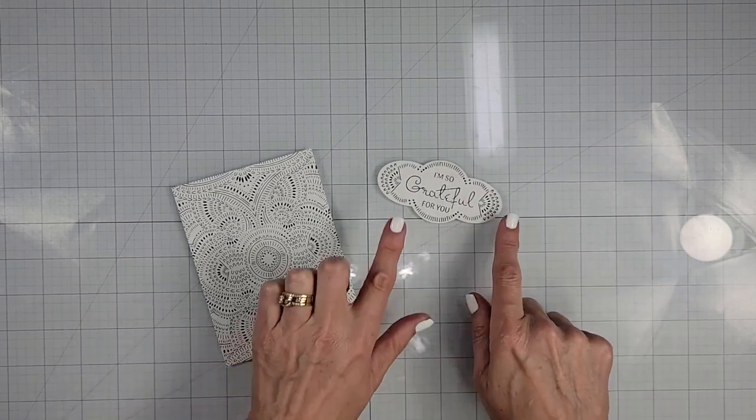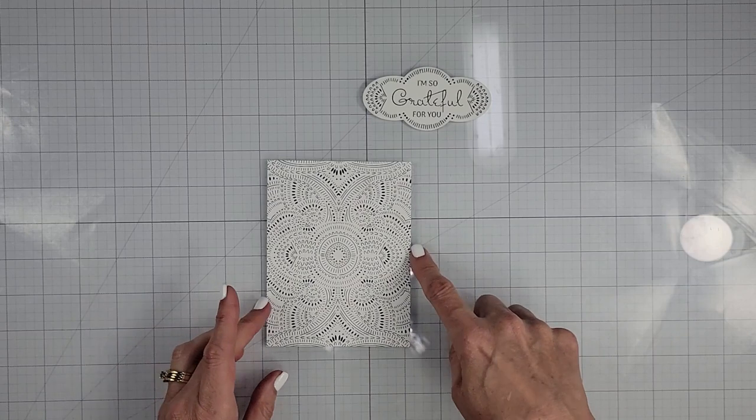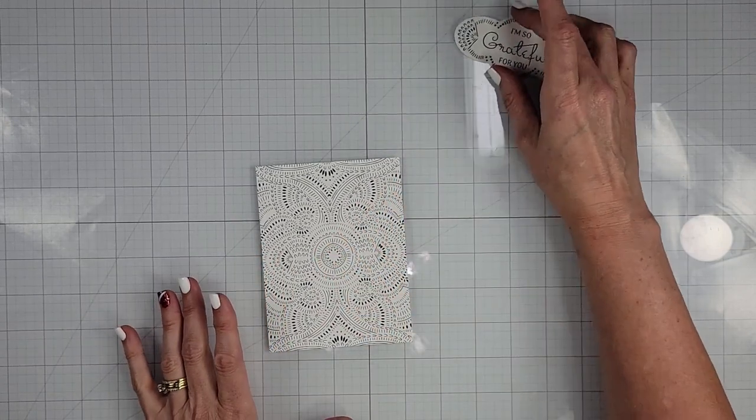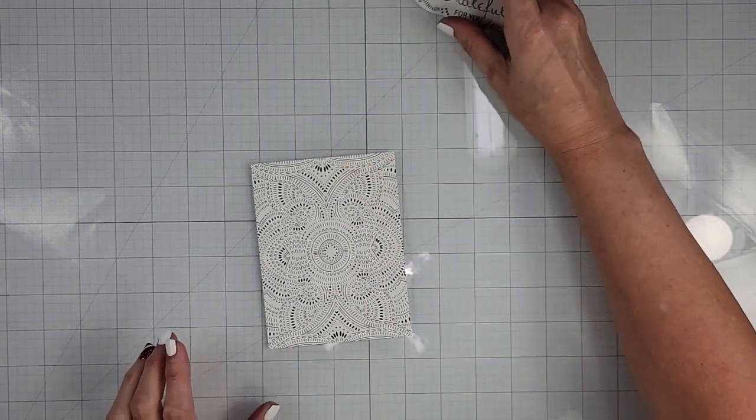Okay, so while it was gone, I cut this out using the coordinating die. And I just went ahead and trim this down to be an A2 size. It is not perfect. You can tell, but it'll work just fine.